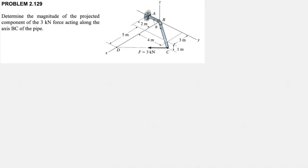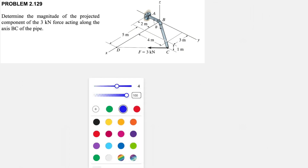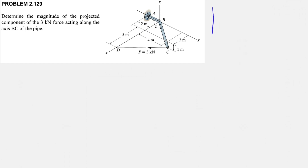Welcome back. In today's video we're going to solve a question about projection of a vector on another vector using the dot product. We have a 3D question where we need to determine the magnitude of the projected component of the 3 kN force acting along the axis BC of the pipe. We need to find the dot product of F_BC and the unit vector for pipe BC. Let's start with the unit vector of the pipe.